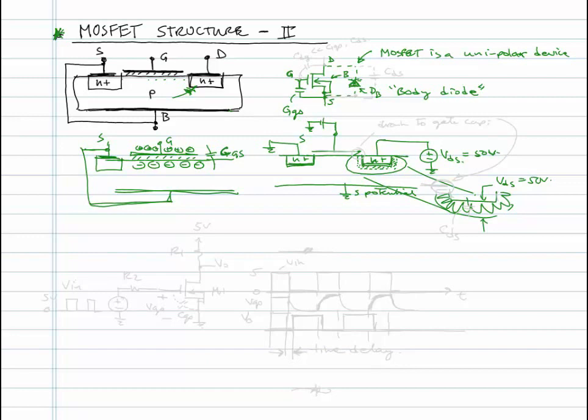So you'll get a capacitance from the drain to source, and we'll call that CDS. So we can actually put that out here, since it's crowded in by the transistor, but it's basically between the drain and source, we'll call it CDS.